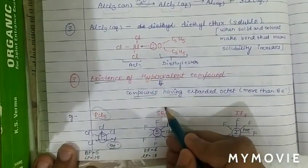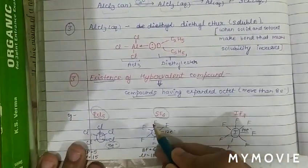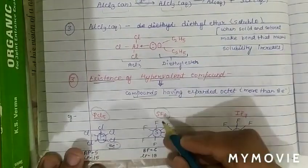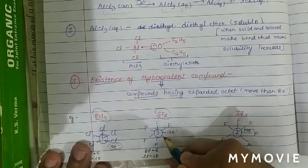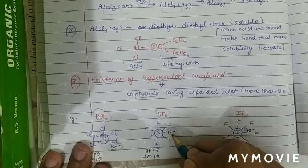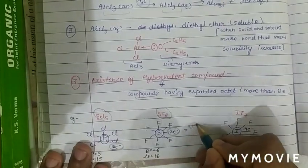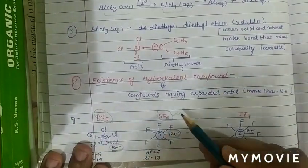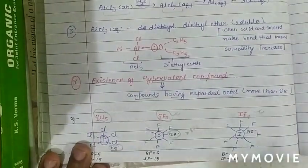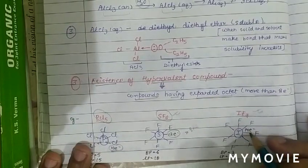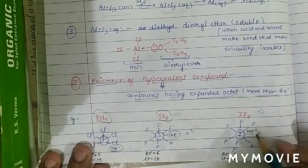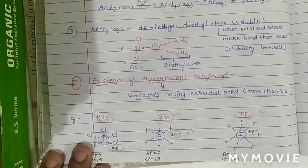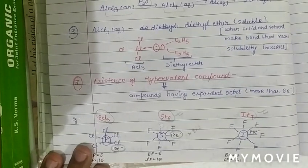Similarly in SF6, all fluorine atoms have complete octets, but sulfur has twelve electrons — an expanded octet. In IF7, around iodine there are fourteen electrons. These are examples of expanded octet which are not explained in Lewis theory, and Lewis theory has no discussion about hypervalent compounds.